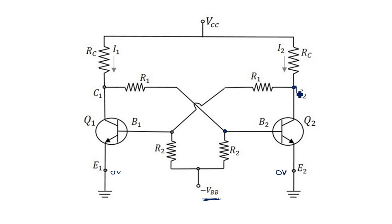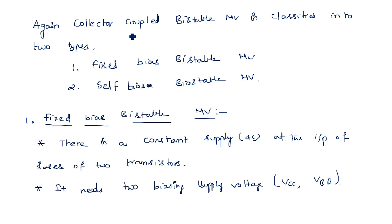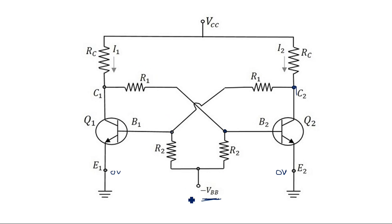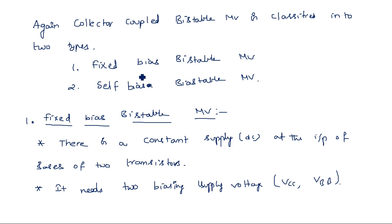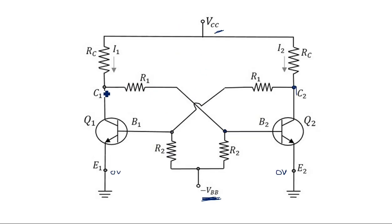The fixed bias is provided by a minus VBB potential at base 1 and base 2, with R2 resistors for current limiting. Current from VCC flows toward C2, and if a transistor is in the off state, that current goes to the base of the other transistor; if on, it goes directly to ground. This confirms the classification: collector coupled, with collectors cross-coupled — C1 to base 2 and C2 to base 1 — and fixed bias supply minus VBB along with VCC to set the Q point.